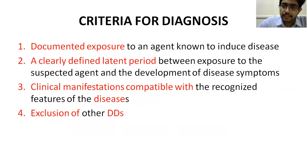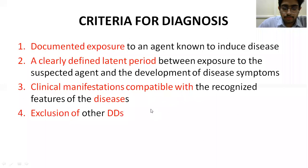There are four criteria for diagnosis. If these four are fulfilled, we can say the patient might be suffering from occupational lung disease. The four criteria include: documented exposure to an agent known to induce disease; a clearly defined latent period between exposure and development of symptoms; clinical manifestations compatible with recognized features of occupational lung disease; and exclusion of other differential diagnoses that may present similarly.